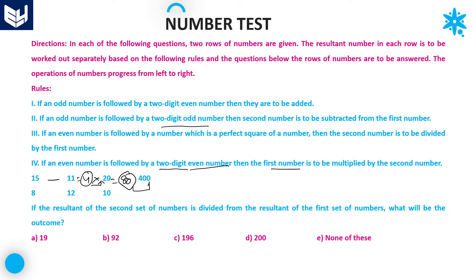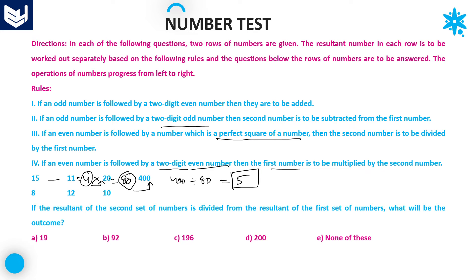Now 80 is even, followed by 400, which is a perfect square. Rule 3 applies: the second number is divided by the first number — 400 divided by 80 equals 5. This is the final result of the first row of numbers: 5.